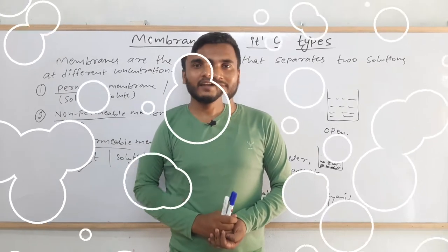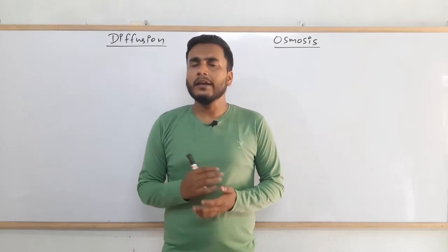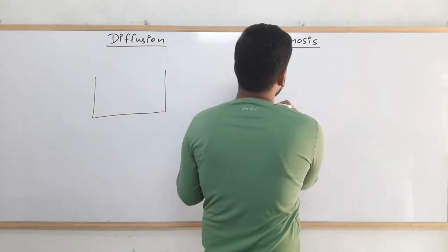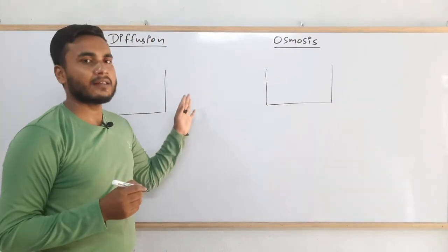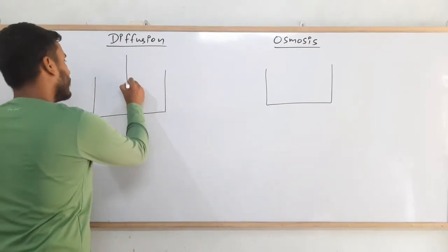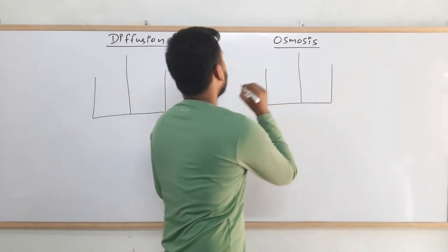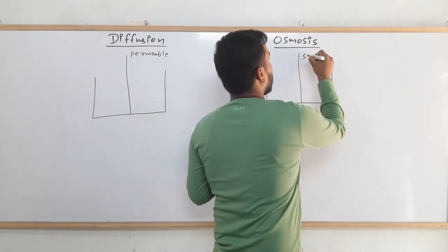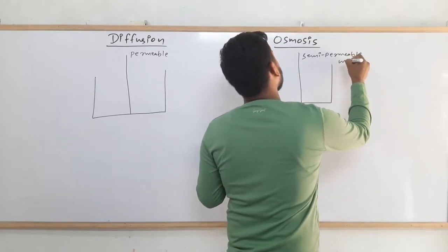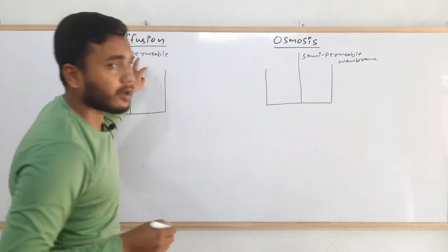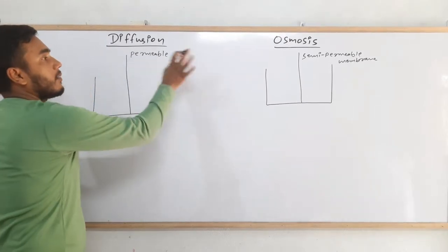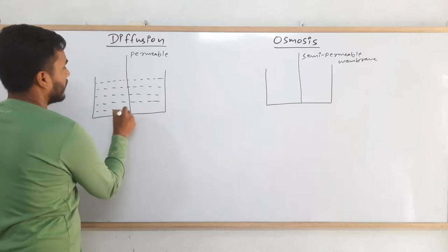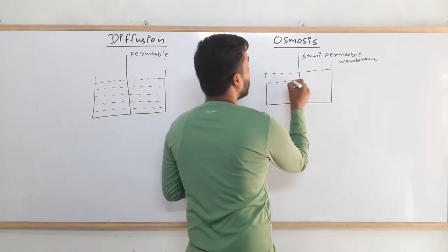Now let us understand about diffusion and osmosis. Diffusion and osmosis are almost similar but they are not actually the same thing. Let me draw two figures — one for diffusion and another for osmosis — side by side so it will be easier to differentiate between them. In the diffusion case, consider a permeable membrane, and in the osmosis case, a semi-permeable membrane. In both sides, there is the same liquid but at different concentrations — a concentrated solution and a dilute solution.